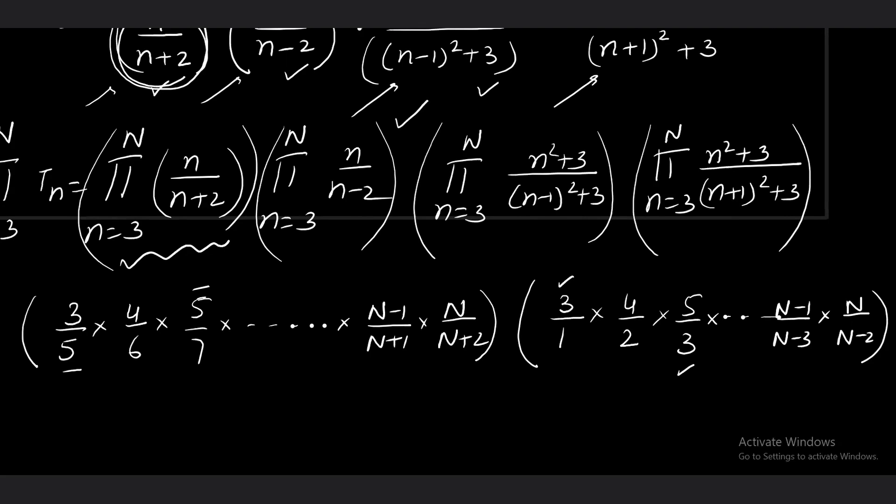Now coming to the third product. Start with n = 3. It becomes 3² = 9 + 3 = 12, divided by (3 - 1)² = 4, plus 3 = 7. Now keep n = 4. It becomes 4² = 16 + 3 = 19, denominator becomes 3² + 3 = 12. From the second term onwards, terms are similar and will start getting cancelled. The last term becomes (n² + 3)/(n - 1)² + 3.